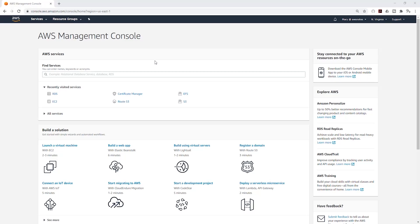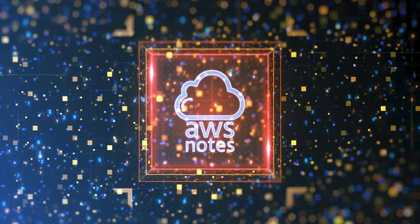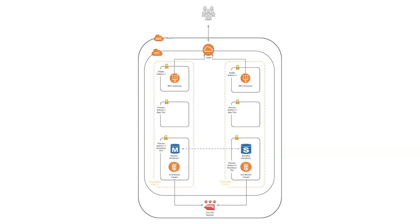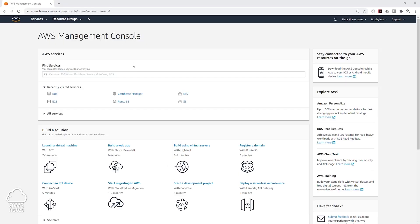Hello. In this lecture, we are going to create an Elastic File System with mount targets in the database subnet in each availability zone. Then we will put our application code in that file system so that our web servers can pull that application code from the same location. To create our file system,